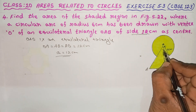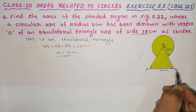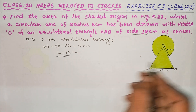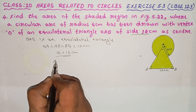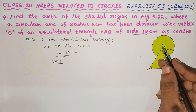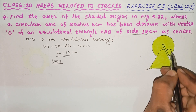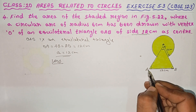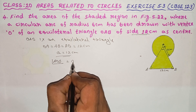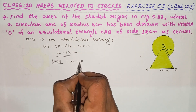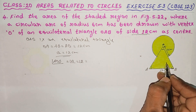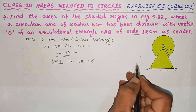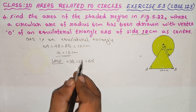For an equilateral triangle, all the angles are equal. The angles A, B, and O — angle AOB is equal to angle A, which is equal to angle B. For an equilateral triangle, the angle measurement is 60 degrees. So all the angles are equal to 60 degrees.